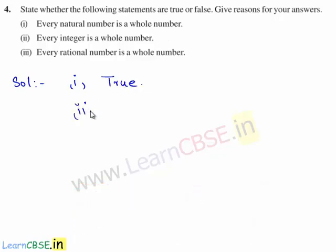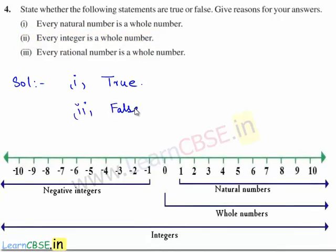Now let us consider the second statement. The second statement given is: every integer is a whole number. The statement is false because integers can also contain negative numbers, but the set of whole numbers contains only positive numbers. Hence every integer cannot be a whole number.